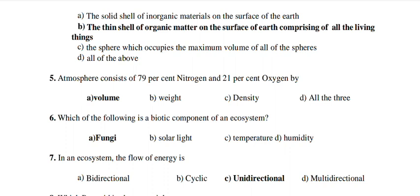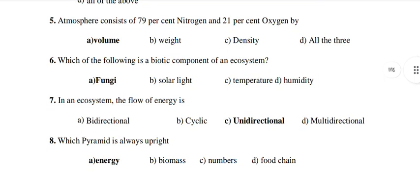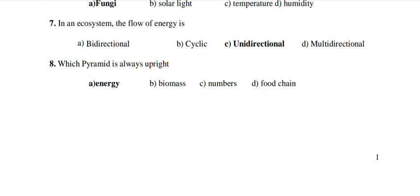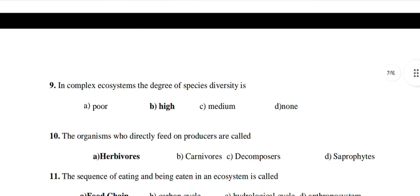Which of the following is a biotic component of an ecosystem? Fungi. In an ecosystem, the flow of energy is unidirectional — that is the ecosystem property. Which pyramid is always upright? Energy. In a complex ecosystem, the degree of species diversity is high.